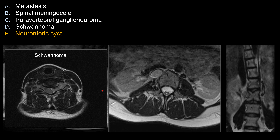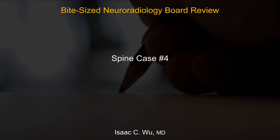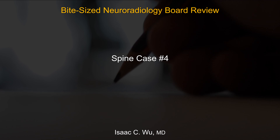For choice D, schwannoma — schwannoma classically presents as a dumbbell shape with both an intraspinal component causing expansion of the neural foramen as well as an extraforaminal component. On T1 they tend to enhance. In this case the lesion is too well-circumscribed and the location is not typical for schwannoma. Overall, neuroenteric cysts remain the best answer in this case. That's all for this case — good luck on your exam.